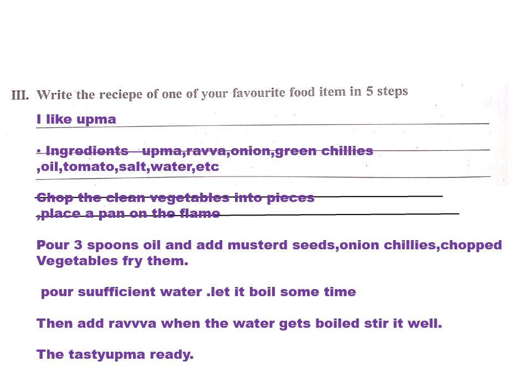Chop the clean vegetables into pieces. Place a pan on the stove. Pour 3 spoons of oil and add mustard seeds, onion, and chillies. Pour some water and let it boil for some time. Then add rava. When the water gets absorbed, stir it well. The tasty Upma is ready to serve.